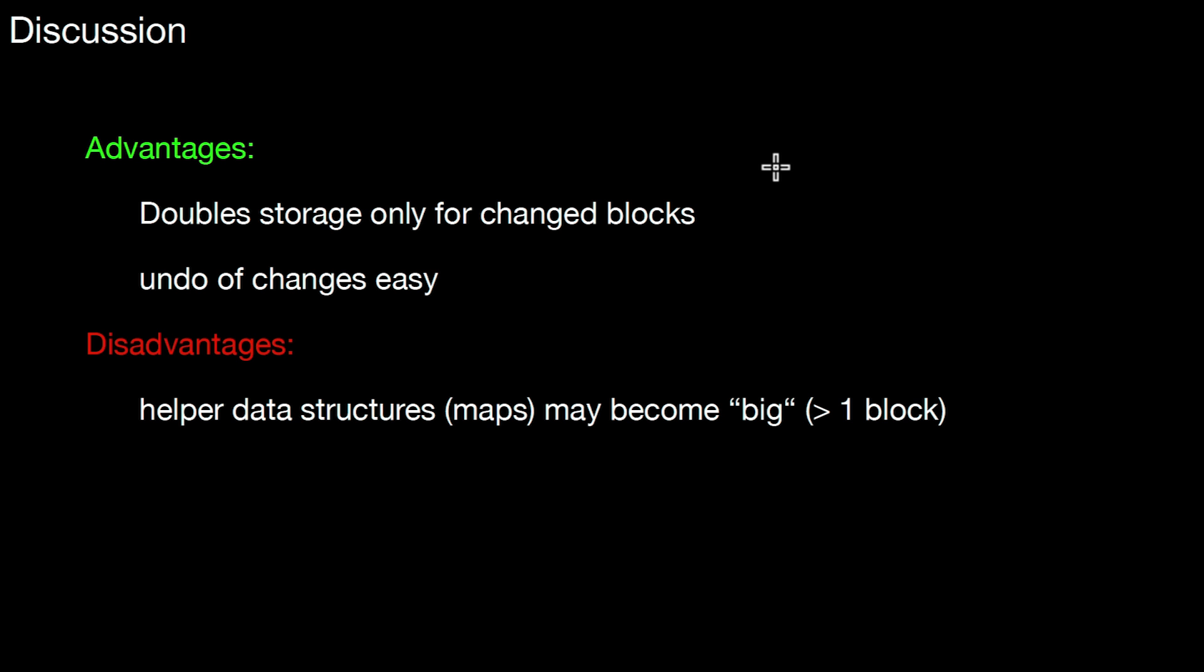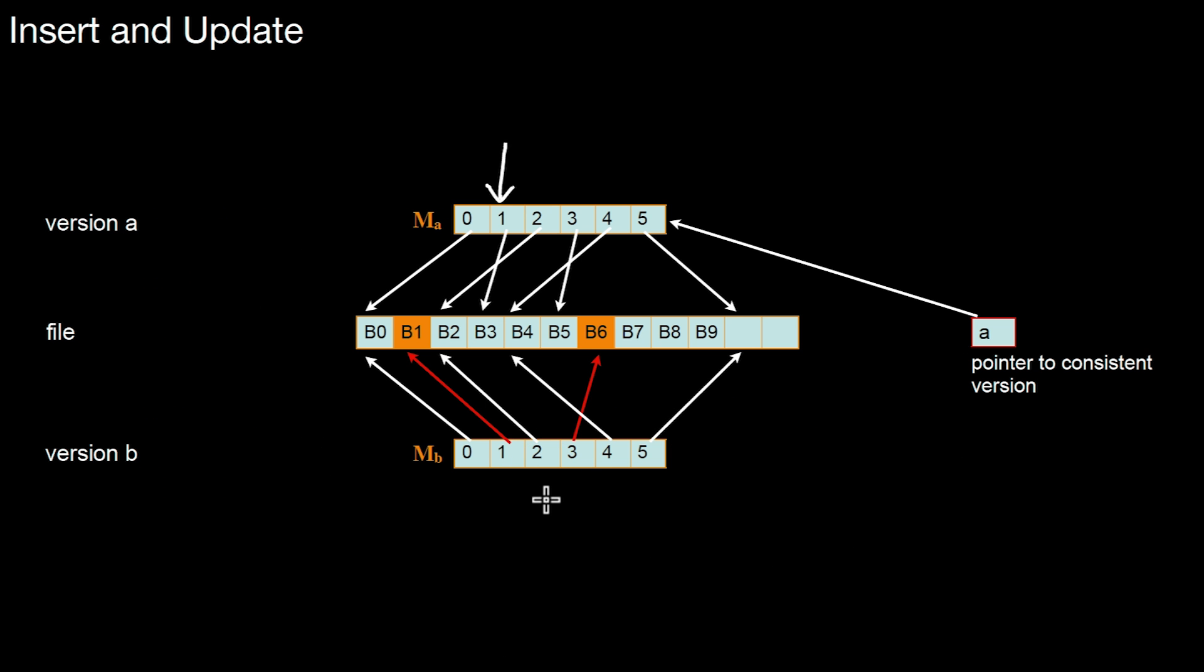So, one disadvantage, however, is that the helper data structures, with helper data structures I mean those maps, MA and MB, may become pretty big. Bigger than the block. So, there is some concern, but whether that is so severe can be questioned. However, what's more severe here is a high degree of fragmentation. So, what do I mean by fragmentation? I already explained it in my video on TwinBlock. But let's look at the concrete example we've seen already here in the context of shadow storage.